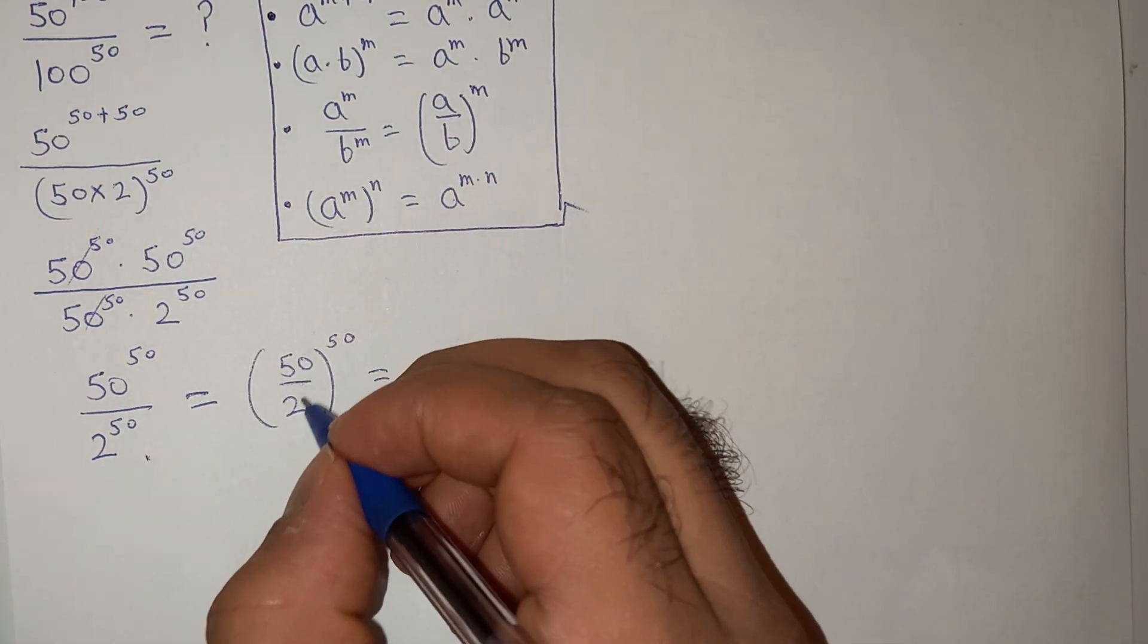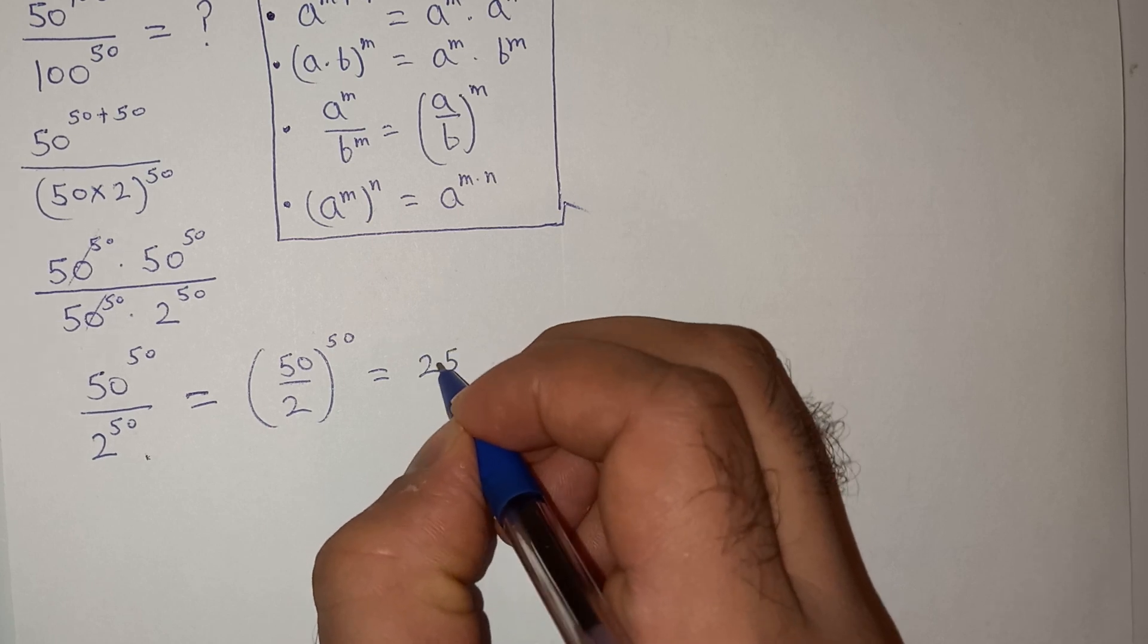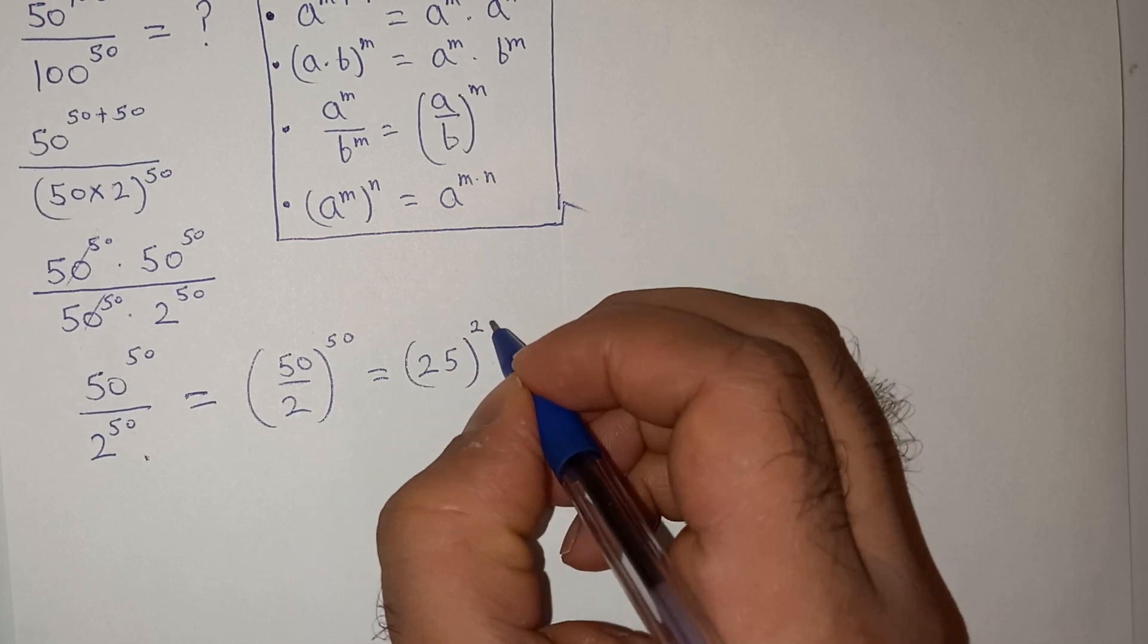Now this will be 50 divided by 2 is 25, so 25 to the power 50.